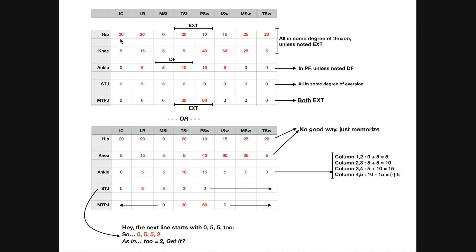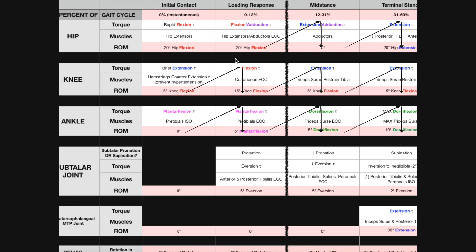That implies you kind of have to have these more or less memorized. I'm zoomed in on that comprehensive table and I've got some arrows showing my line of thinking. For the first one at the hip, it really doesn't help much, but once you're at the loading response it's very predictive. What we're going to do is look between two phases — the degrees and whether it's in flexion or extension relative to the next one — and we can use that to predict the torque.